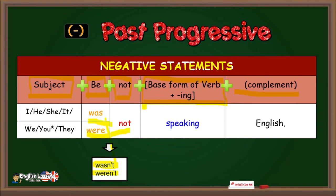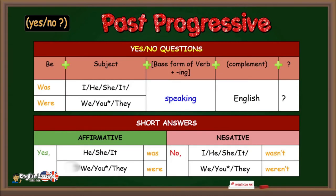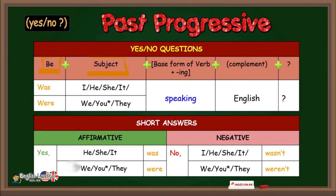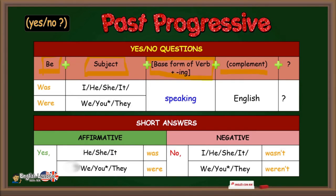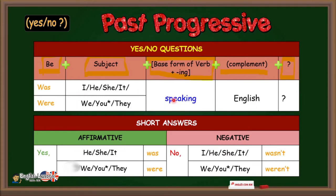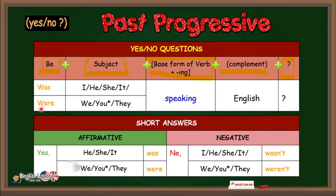In order to make yes/no questions, you must write first the verb to be, plus subject, plus base form of the verb plus -ing or gerund, plus complement, plus question mark. Examples: Was he speaking English? Was she speaking English? Were you speaking English? Were they speaking English?